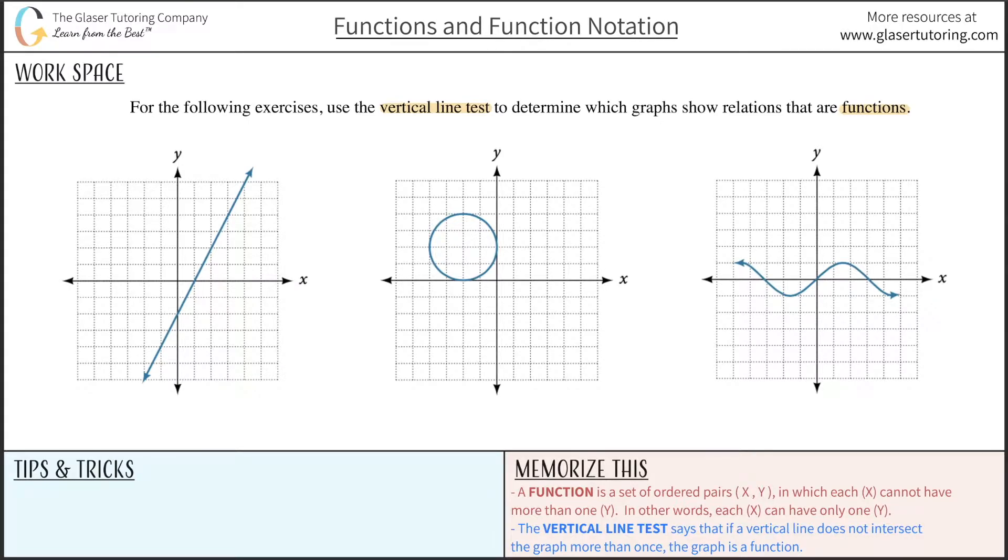So the vertical line test basically says that if a vertical line does not intersect the graph more than once, meaning it intersects it once or less, the graph is indeed a function.